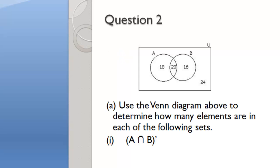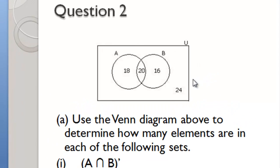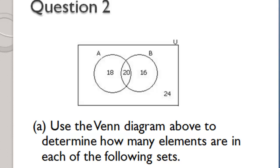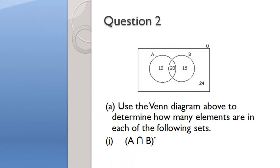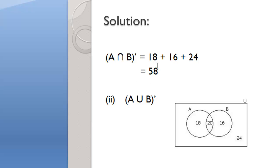Let's go on to number 2. Question 2 shows a Venn diagram and asks us to use it to determine how many elements are in each of the following sets. Part 1: A intersect B complement. Let's identify A intersect B complement in this Venn diagram. Intersect means the part of the sets that is common to both A and B. A intersect B complement is everything outside of that region, which equals 18 plus 16 plus 24, summing to 58.